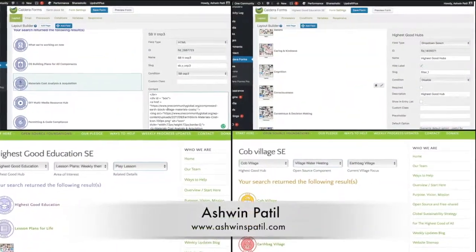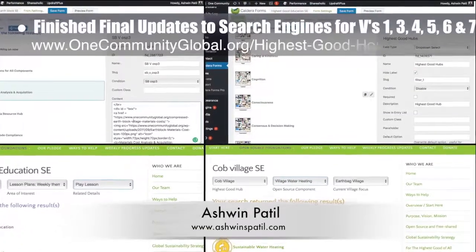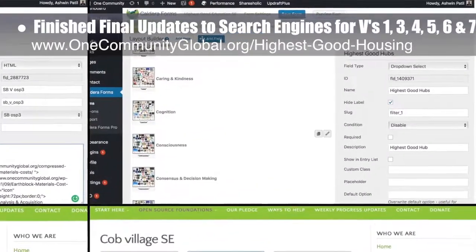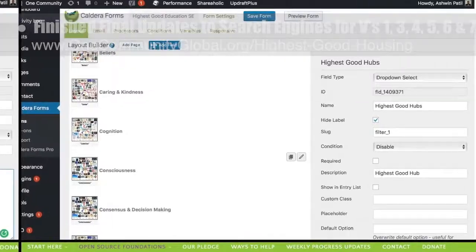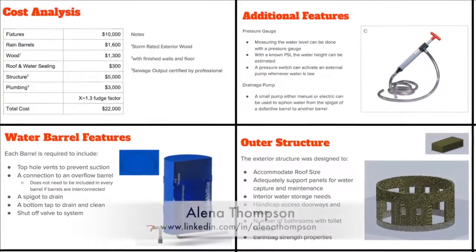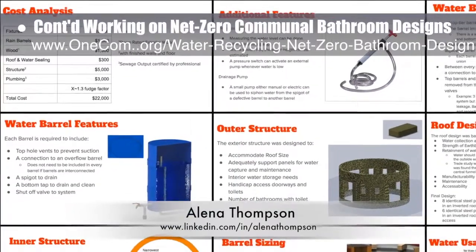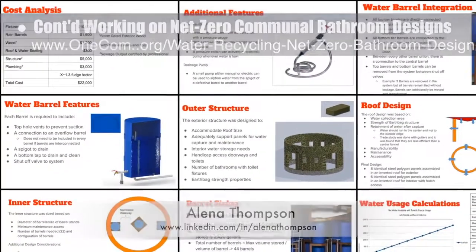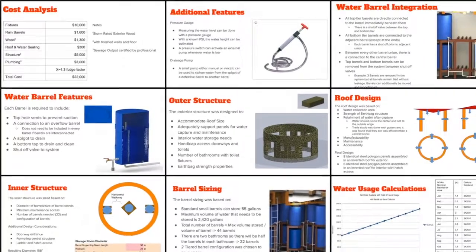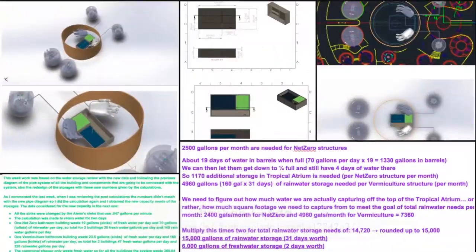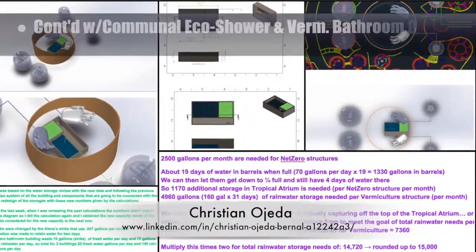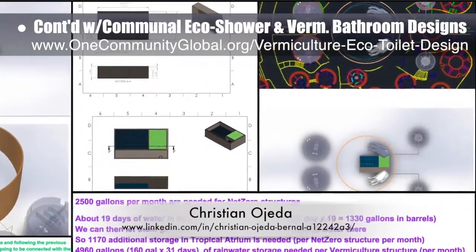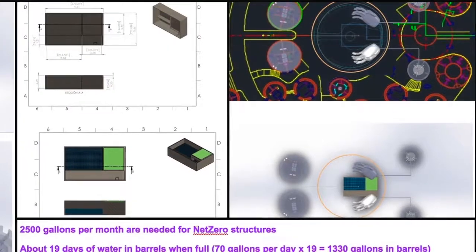Working with Ashwin Patil, web developer, we finished final review and updates to the search engines for village one, three, four, five, six, and seven that are already live on the site. Ashwin also added the final missing icons to the education search engine. Elena Thompson, mechanical engineer, completed her 20th week helping with the Net Zero communal bathroom designs — this week's focus was adding additional details and imagery to the presentation, and we're about 80% done. Christian Ojeda, mechatronic engineer, completed his 17th week helping with the heat recycling communal eco-shower and vermiculture bathroom designs — this week's focus was another round of updates and revisions to the water storage layouts.